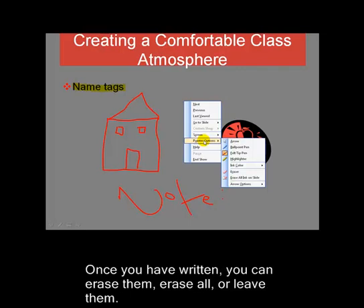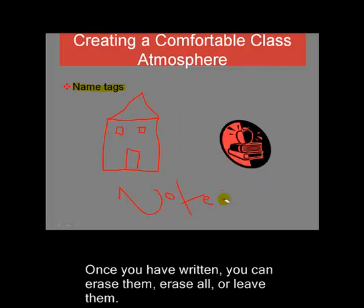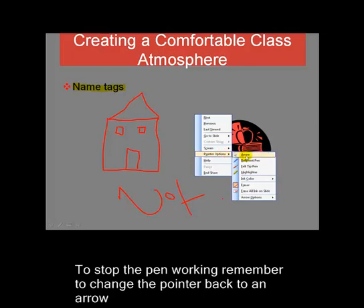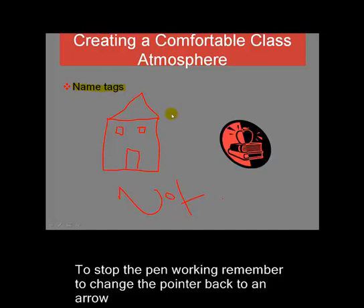Once you've got some writing or annotations onto the screen, you can use Erase, which allows you to erase one step at a time, or Erase All. I'll leave those on there to show you something in a few minutes. Once you've finished drawing and want to move on through the presentation, you won't be able to unless you switch back to the arrow. Once you're back to the arrow, you can then click through the presentation in the normal way.